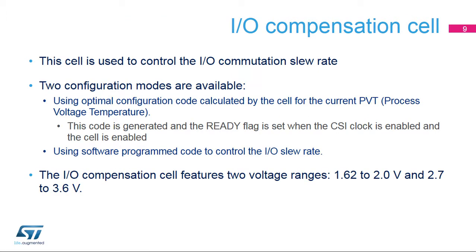This cell is used to control the I.O. commutation slew rate — T-fall or T-rise — to reduce I.O. noise on the power supply. The cell is split into two blocks. The first block provides an optimal code for the current process voltage temperature, or PVT. The code stored in this block can be read when the ready flag of the SysConfig CCSR register is set. The second block controls the I.O. slew rate. The user selects the code to be applied and programs it by software.